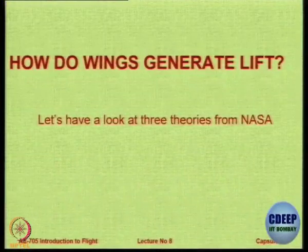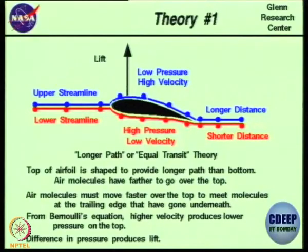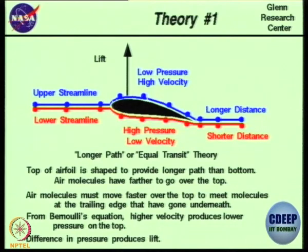Our first question is: how do wings generate lift? To answer that, let us look at some theories which have been proposed. The first theory comes from the Glenn Research Center of NASA. As per this theory, lift is generated because of the curvature of a cross-section called an aerofoil, which we studied last time.